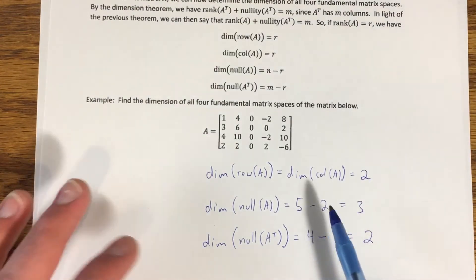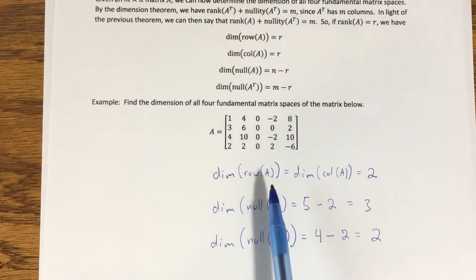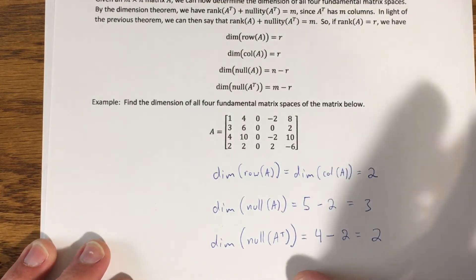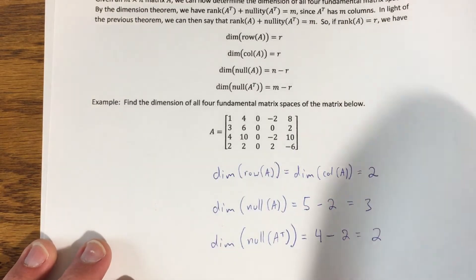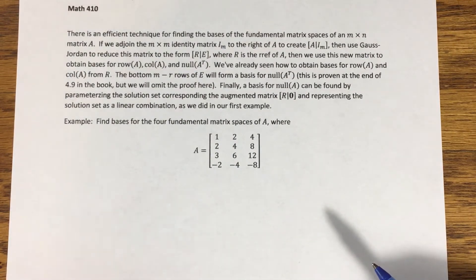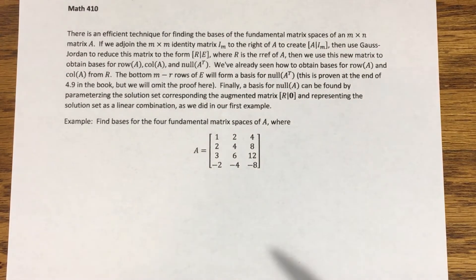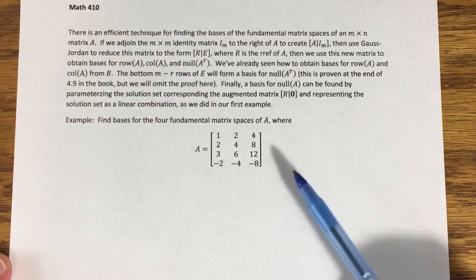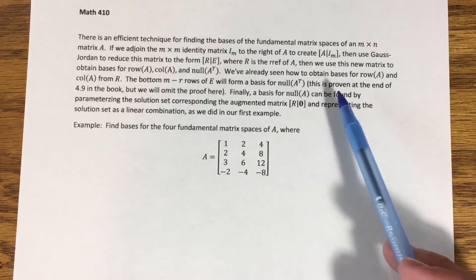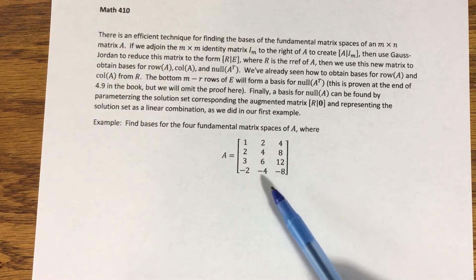Notice we did this especially quickly because we didn't have to find a basis for the row space of A — we've already done that in a previous section. But for a brand new matrix, you would have to start by finding the dimension of your row space by determining a basis, or at the very least determining the number of leading ones in the reduced row echelon form of that matrix. That previous example only had us finding dimensions for the fundamental matrix spaces. But sometimes we want to do more than that — knowing the dimension is nice, but a little more informative would be knowing a basis for each one of those fundamental matrix spaces. So that's what we're going to attempt to do here.